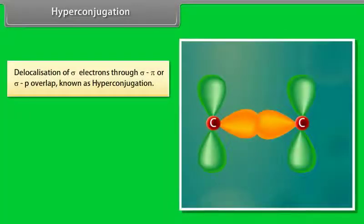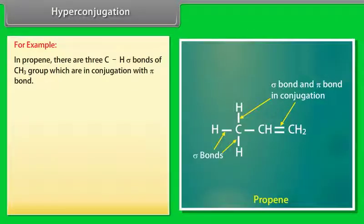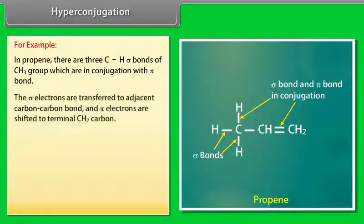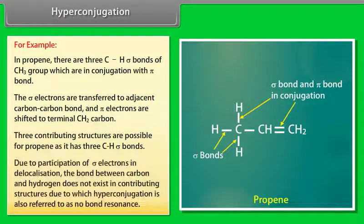Hyperconjugation: delocalization of sigma electrons through sigma-pi or sigma-p overlap is known as hyperconjugation. The sigma bond in conjugation with the pi bond, or sigma bond in conjugation with a p orbital, participates in delocalization and stabilizes the system. For example, in propene, there are three C-H sigma bonds of the CH3 group in conjugation with the pi bond; the sigma electrons are transferred to the adjacent C-C bond and pi electrons shift to the terminal CH2 carbon. Three contributing structures are possible for propene. Due to participation of sigma electrons in delocalization, the bond between carbon and hydrogen does not exist in contributing structures, which is why hyperconjugation is also referred to as no-bond resonance.